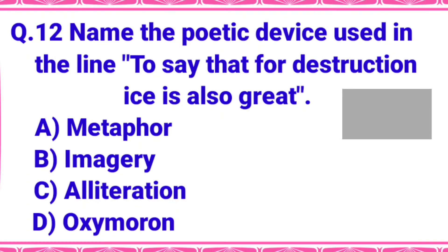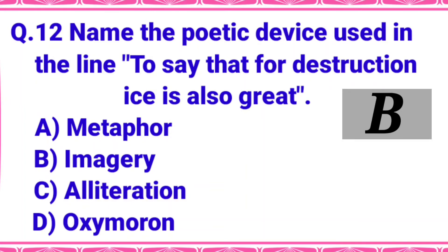Name the poetic device used in the line 'To say that for destruction ice is also great.' Option A: metaphor, B: imagery, C: alliteration, or D: oxymoron. Your time starts now. The right answer is option B - imagery. In this line there is also imagery because the poet is imagining what will happen one day - that the world will become so cold from ice that it will be destroyed. On one hand they imagine the world ending by fire, and on the other hand they compare it with ice - so both sentences contain imagery.